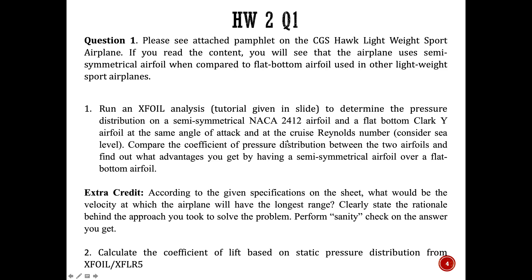What you'll be doing is calculating the cruise Reynolds number for that airplane, then picking an angle of attack. When cruising, you don't fly at a high angle of attack — something like zero, two, or four degrees is appropriate. Feed this data into xflr5 or xfoil and calculate the coefficient of pressure distribution. We haven't fully talked about what coefficient of pressure is yet — we'll cover that on Monday — but this video will show you how to obtain it.